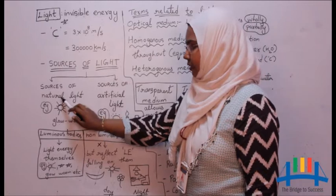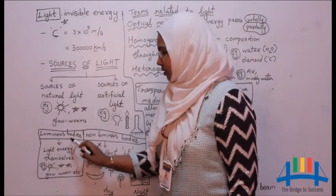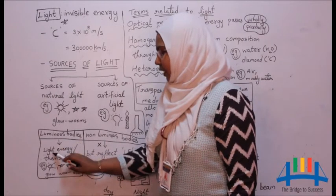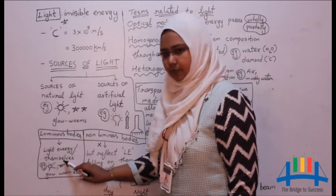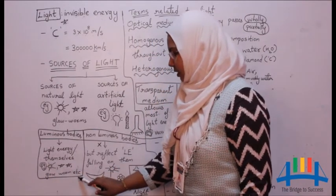Sources of natural light are also called self-luminous bodies. Luminous bodies means which give the light energy by themselves. Example: sun gives its own light, stars, glow worms, etc.